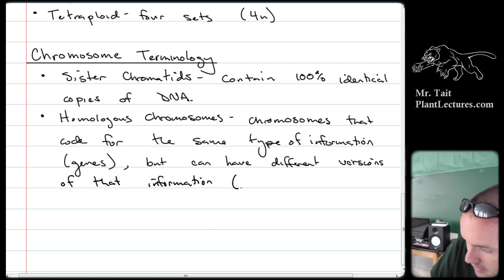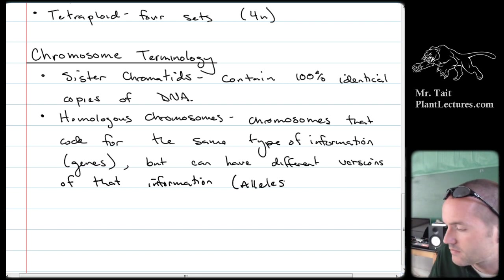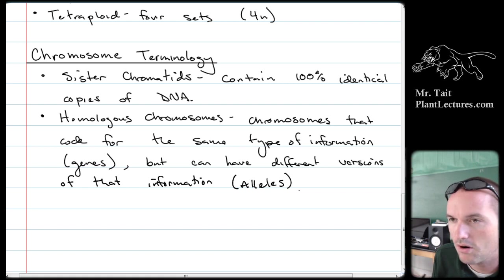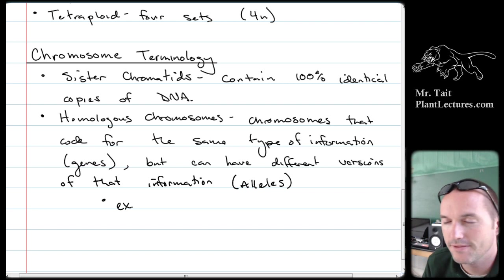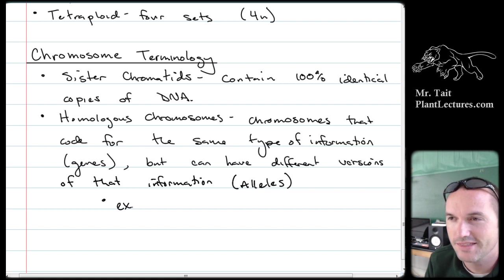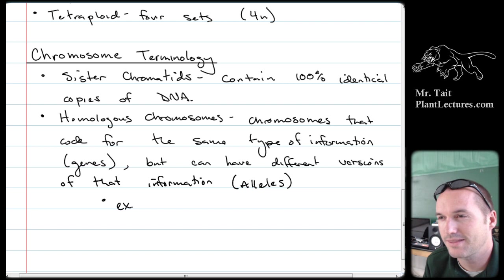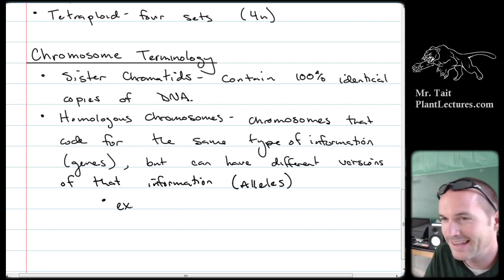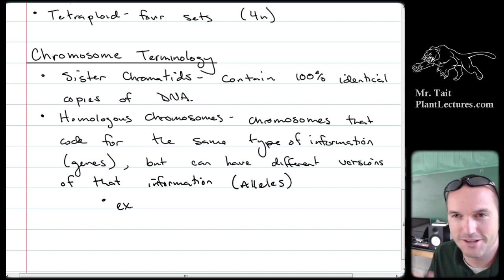Those different versions are called alleles. For example, using hair color: both homologous chromosomes would code for a pigment gene for hair, but one might code for brown and the other for red — those are alleles. Most of your genes aren't coding for trivial things like pigments; most code for really important stuff like enzymes, the sodium-potassium pump, and other critical biological functions.